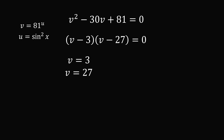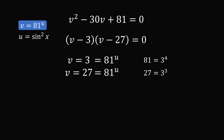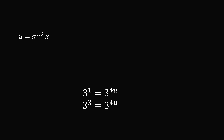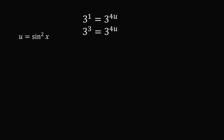So we'll just work to get to x. We know that v is equal to 81 to the power of u. So that means 3 is equal to 81 to the power of u and 27 is equal to 81 to the power of u. To simplify further, notice that 3, 27, and 81 are all powers of 3. In particular, 81 is equal to 3 to the power of 4 and 27 is equal to 3 to the power of 3. So we can further simplify: 3 to the power of 1 is equal to 3 to the power of 4 raised to u, and 3 to the power of 3 is equal to 3 to the power of 4 raised to the power of u. We can use exponent rules to simplify by multiplying these exponents.